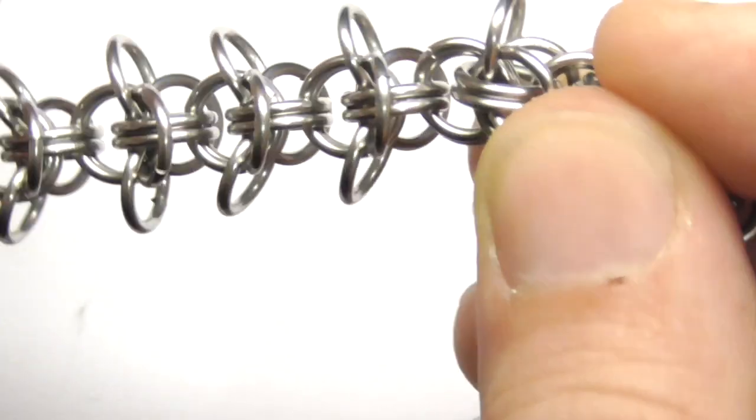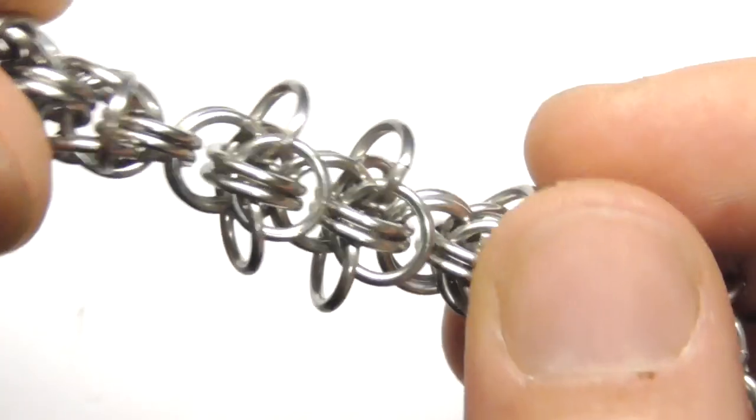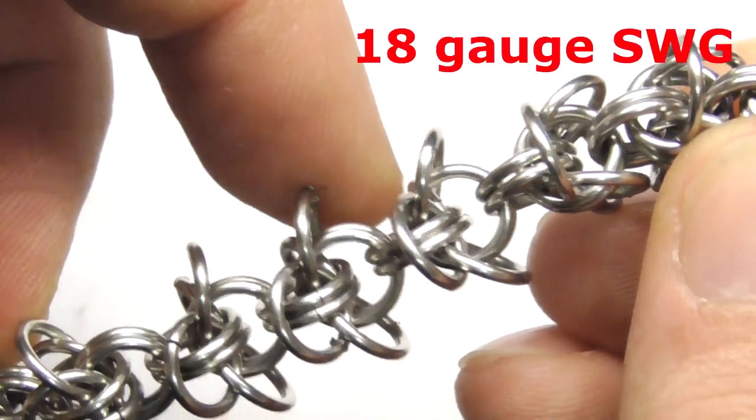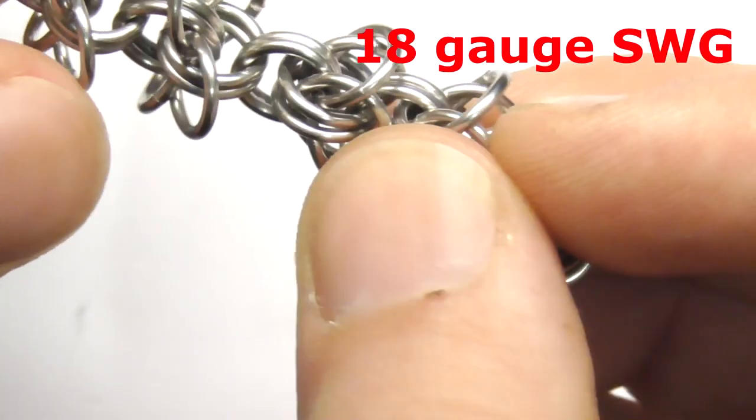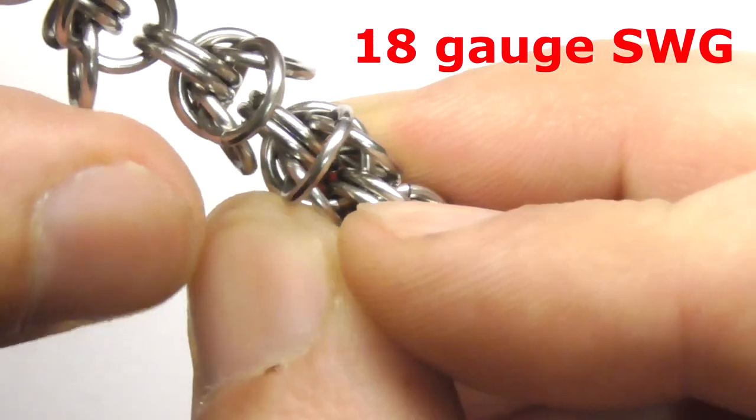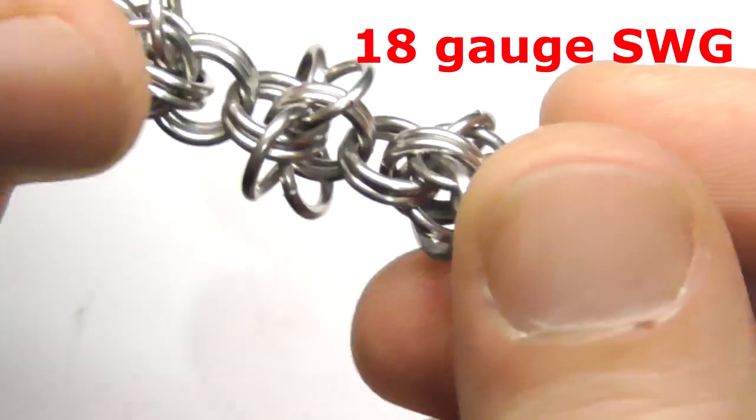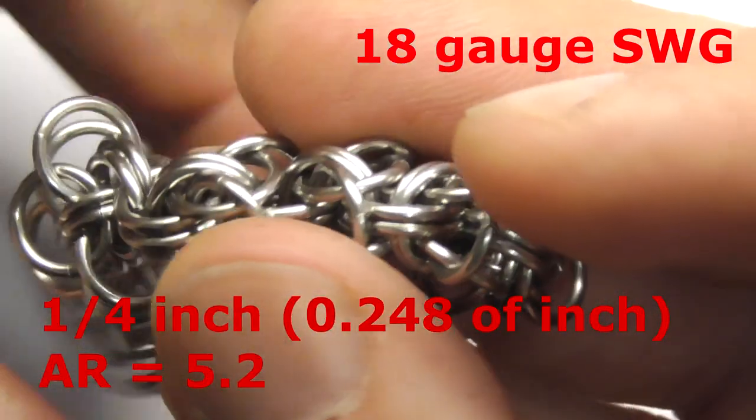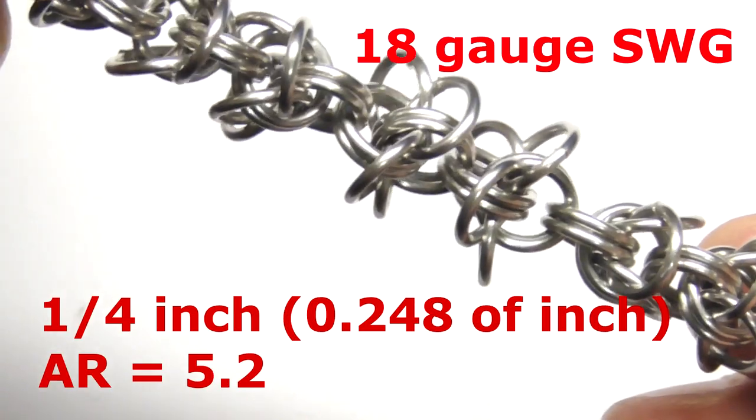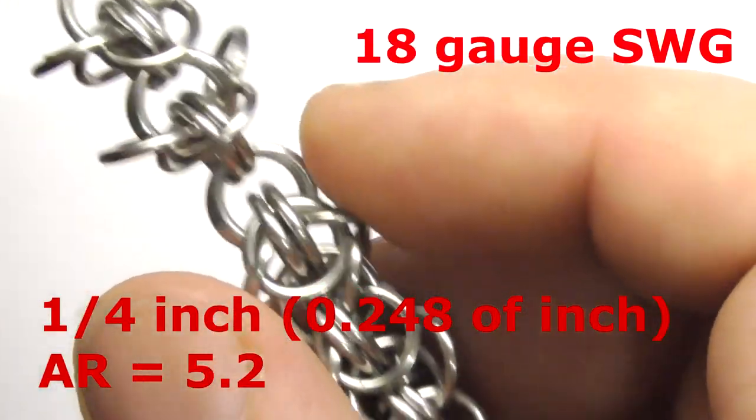For this weave I used stainless steel jump rings. Thickness of the wire is 1.2 millimeters and thickness of the mandrel is 6 millimeters, but inner diameter of the rings became 6.3 millimeters. So that's all you need to know about the materials.